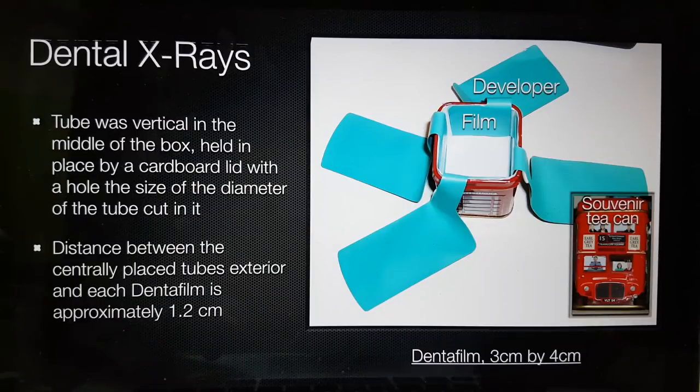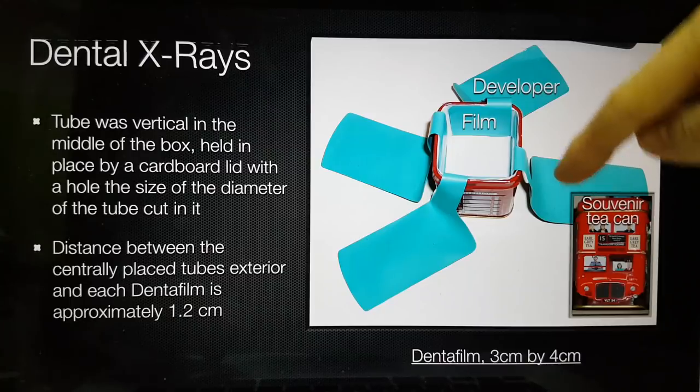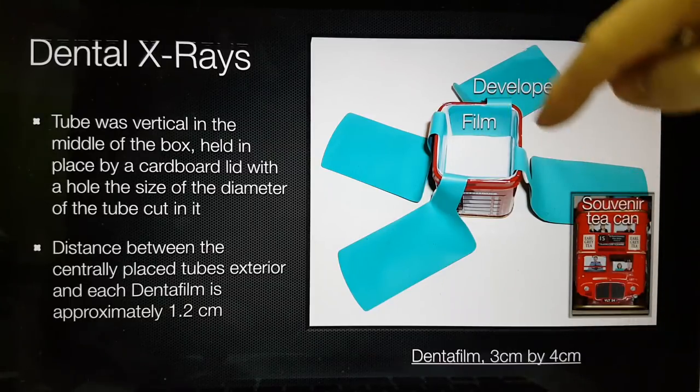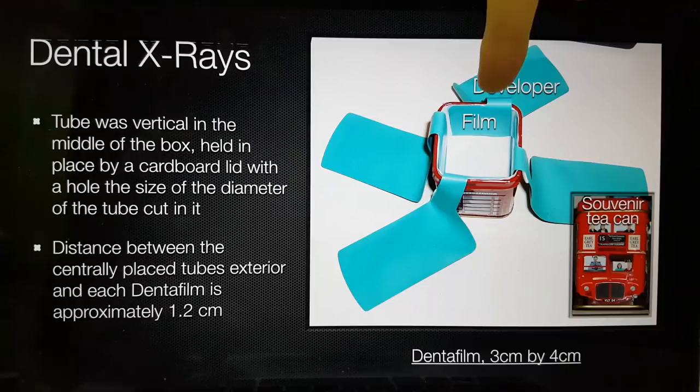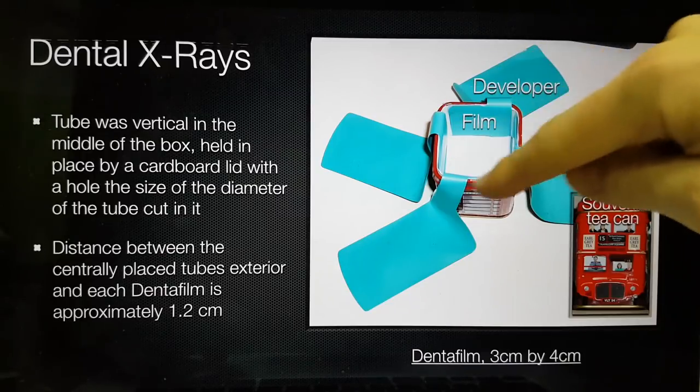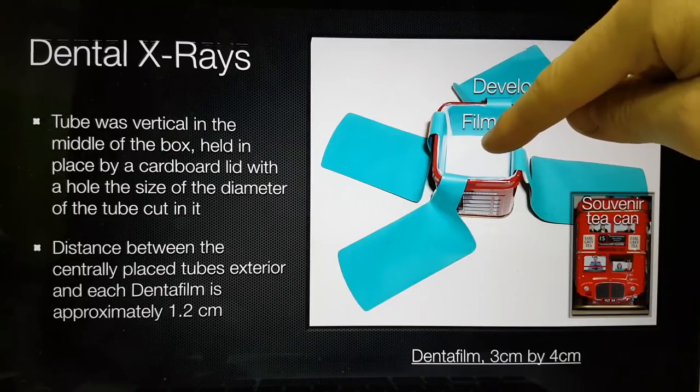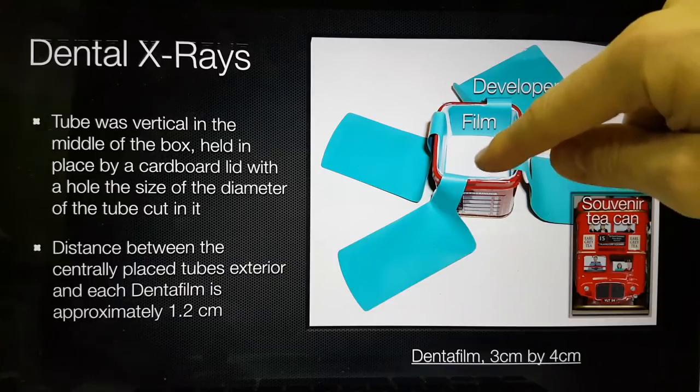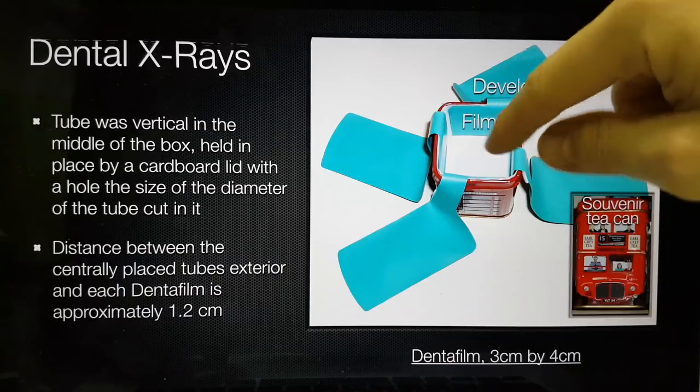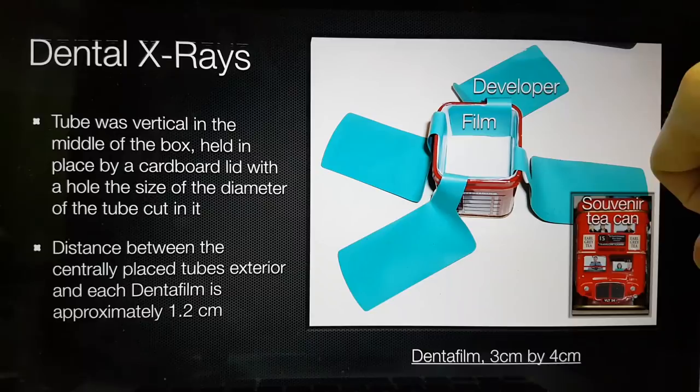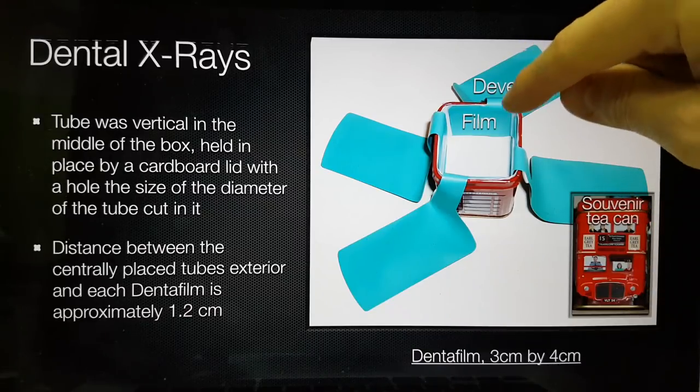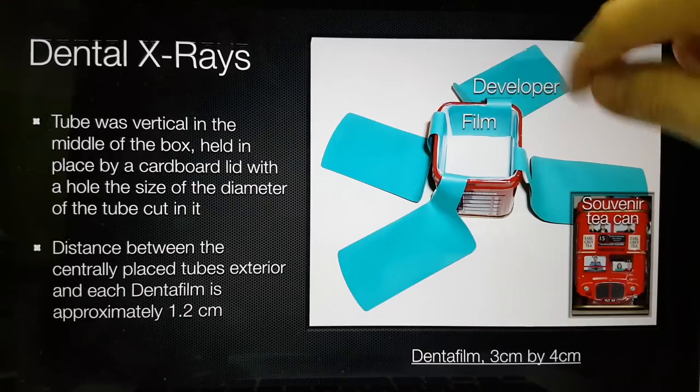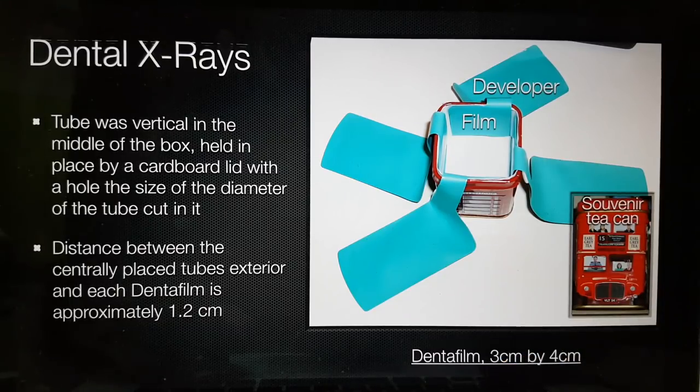The Lion author put the reactor in a tea tin like this, this is a top down angle, so the reactor went into the top and it was held by a piece of card with a hole in it and from the outside of the tube to the film there was about 1.2 cm on each side. So it's a very nice, convenient structure for him to have the film and these are the developer packs for the self-developing Dentafilm. Makes it very easy to do this work.